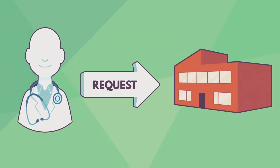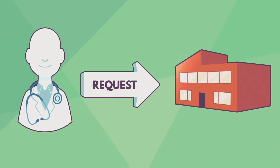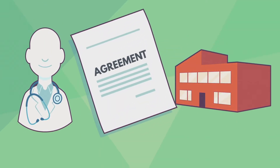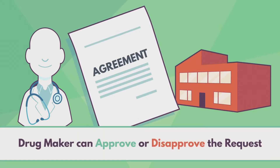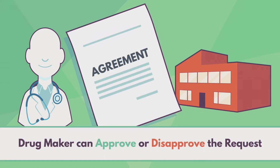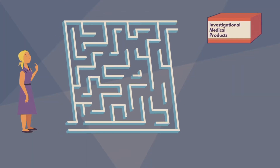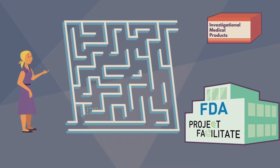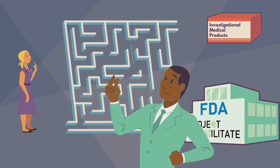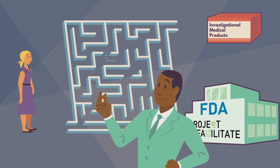To make a request, the patient's physician should ask the drugmaker for an agreement to provide the investigational medical product. The company has the right to approve or disapprove the physician's request. This process can be complex to navigate, particularly for oncology healthcare providers and regulatory professionals who don't have experience working with clinical trials or these types of requests. As a result, FDA has established Project Facilitate.